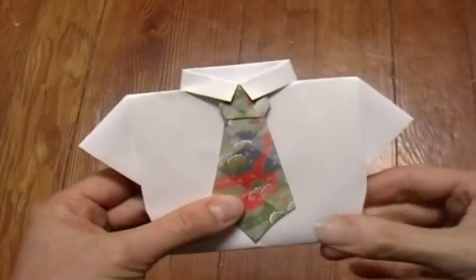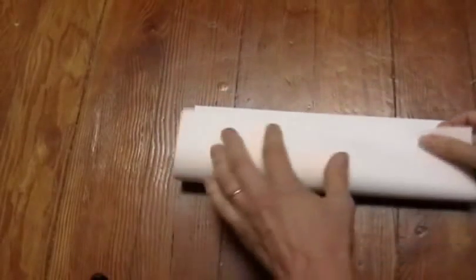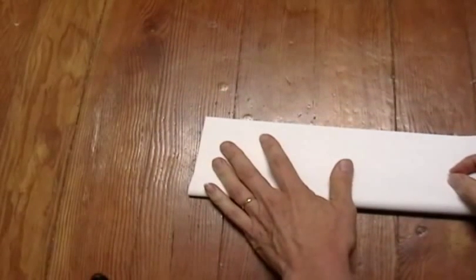To make this shirt and tie, we'll start with the shirt. All you need is a regular piece of copy paper or print paper, 8 1/2 by 11 inches.